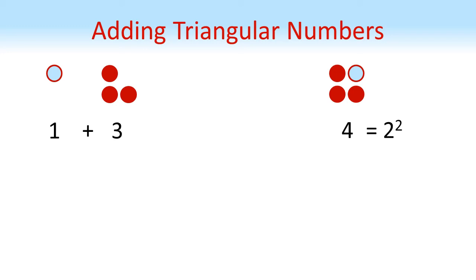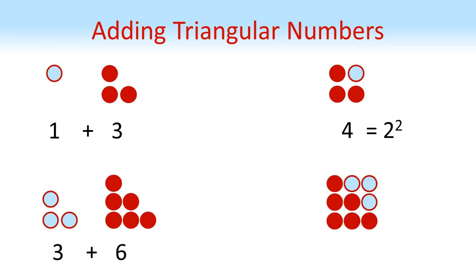Now let's look at what happens if we add the second and third triangle numbers together. 3 add 6. If we rotate the 3 and move it to the top right corner of our 6 again we've got a square this time of 9 dots which is equal to 3 squared. In fact you can do this with any pairing of consecutive triangular numbers. If we add them together we'll always get a square number.